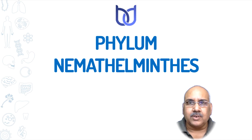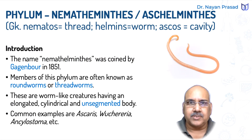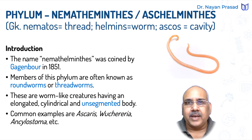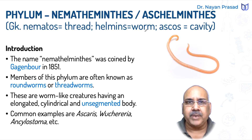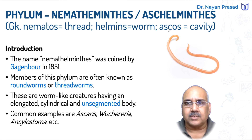Nemathelminths is also called Aschihelminthes. The term Nemathelminths has been derived from Greek language, in which Nematos means thread and helminthus means worm. Thus, the name becomes threadworms. The term Aschihelminthes has been derived from ascos, which means cavity. So these are also called cavity worms.